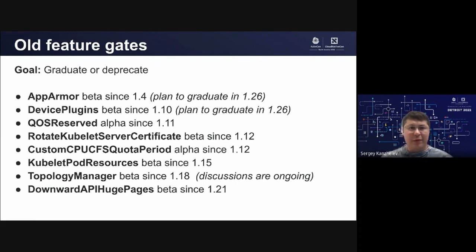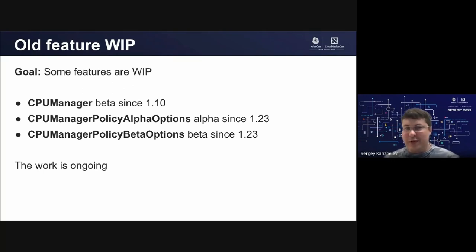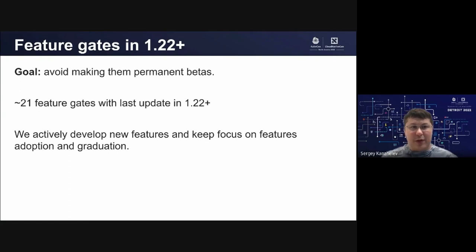At least two of them are planned for 1.26, and we will work on the rest to make sure we don't have any permanent betas. We also have very old features long in beta, like CPU manager. For this kind of feature, we are actively working on new policies and collecting feedback to make sure the feature is done right — that's why it's still in beta and not graduated to GA yet. Even with this focus on eliminating permanent betas, we're still working on new features — some brand new, some just updating from alpha to beta. We are currently at 21 feature gates for SigNode, all being worked on in parallel.